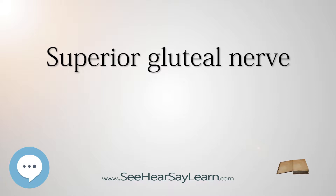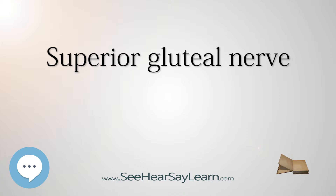The superior gluteal nerve originates in the sacral plexus. It arises from the dorsal divisions of L4, L5, and S1. It leaves the pelvis through the greater sciatic foramen above the piriformis, accompanied by the superior gluteal artery and the superior gluteal vein.